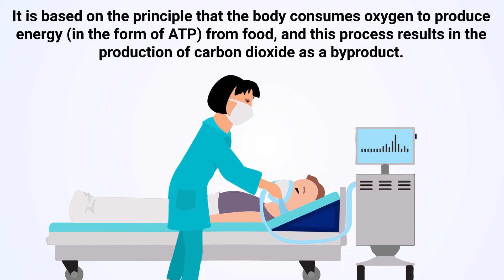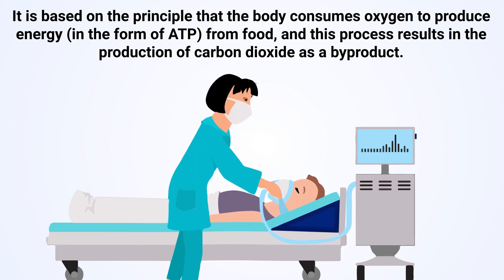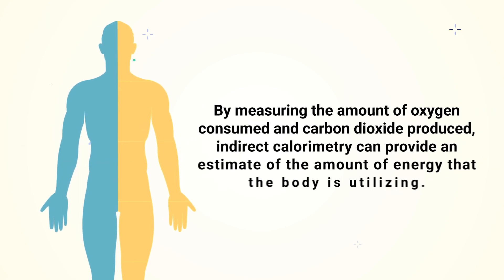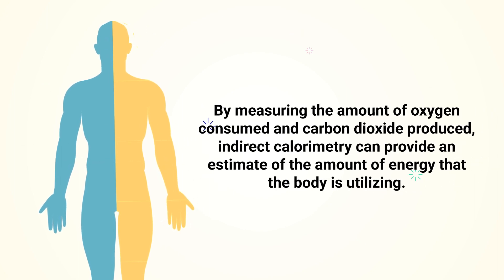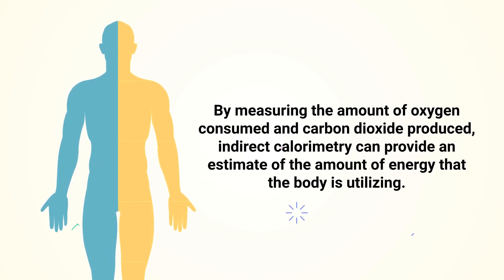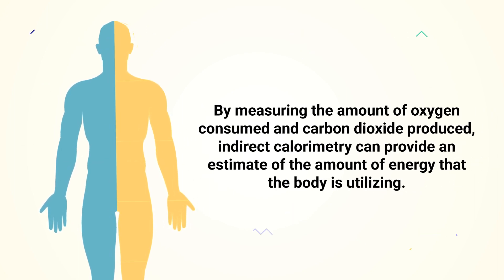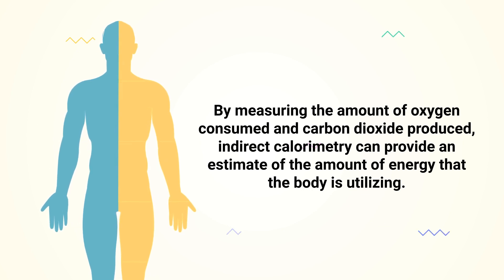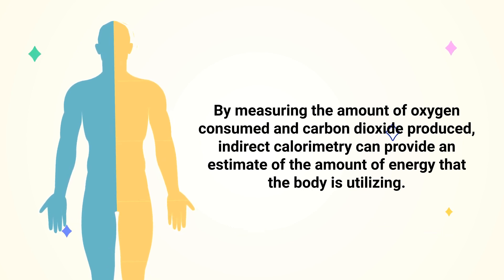Energy is produced in the form of ATP from food, and this process results in the production of carbon dioxide as a byproduct. By measuring the amount of oxygen consumed and carbon dioxide produced, indirect calorimetry can provide an estimate of the amount of energy that the body is utilizing.